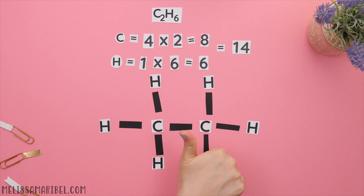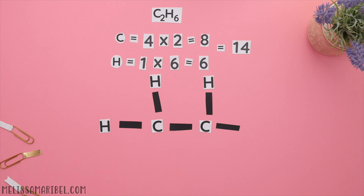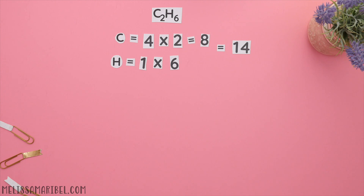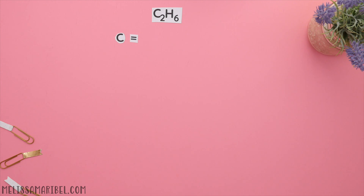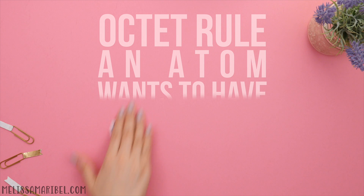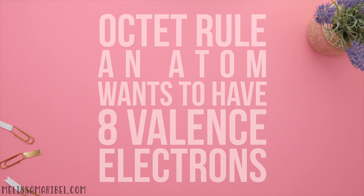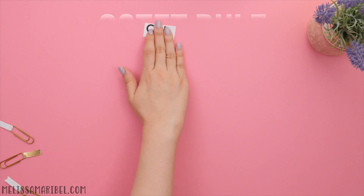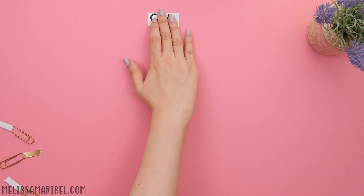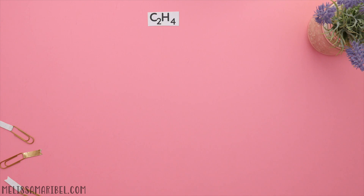You also know the structure is correct because it obeys the octet rule, which states that an atom wants to have eight valence electrons. And for carbon, it must obey the octet rule.